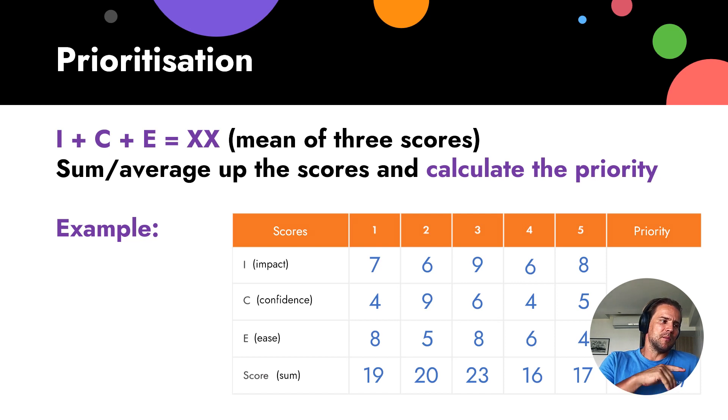For example, we use multiply. You can sum, but you can multiply that. For example, 7 multiply 4 multiply 8. So, you get bigger numbers, and then it's easier to calculate. For example, 5, 5, 5, it's not the same as 6, 4, and 5. So, the average is the same, or sum is the same. But, if you multiply, it will be different numbers. So, it's up to you.